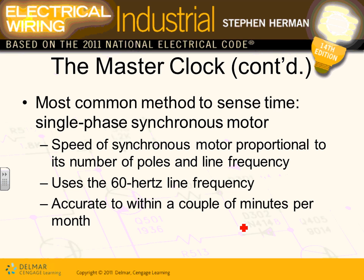In the US, they use a radio signal called WWV from Colorado, done by the National Bureau of Standards, to wirelessly synchronize all these atomic clocks. There are a couple of ways to get clocks to work. The old method used single-phase synchronous motors running at synchronous speed, proportional to the number of poles and line frequency — they receive 60 Hz and convert it into time via the synchronous motor.